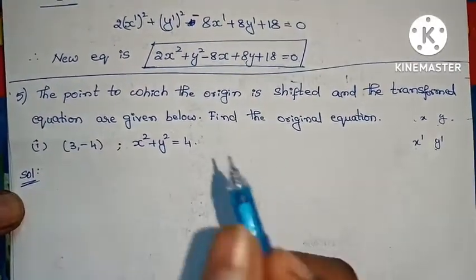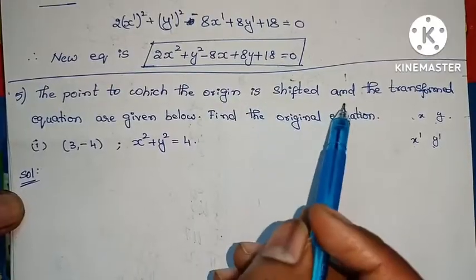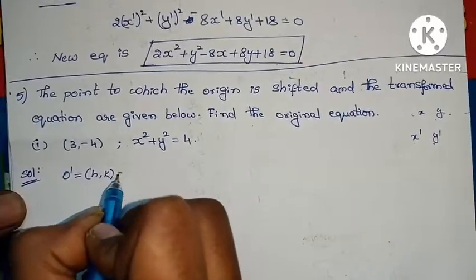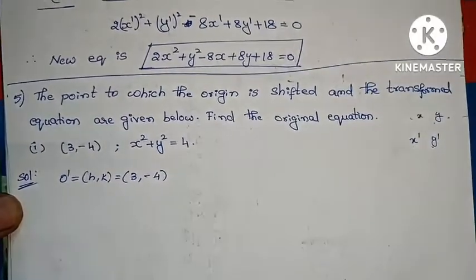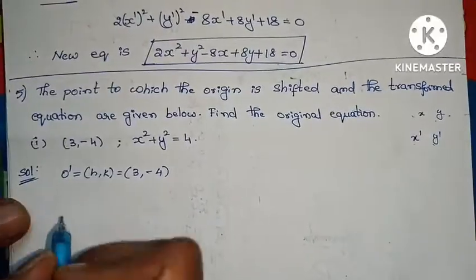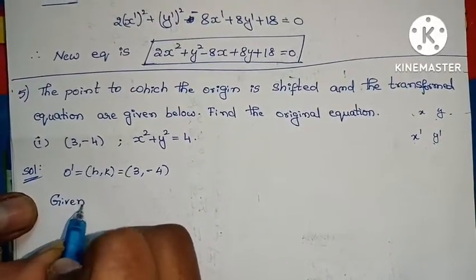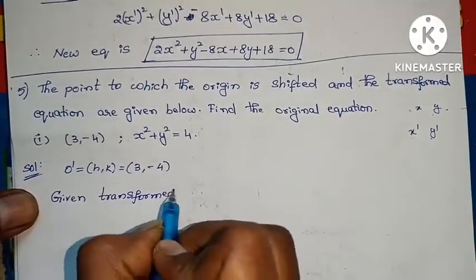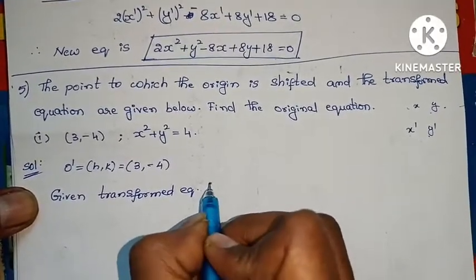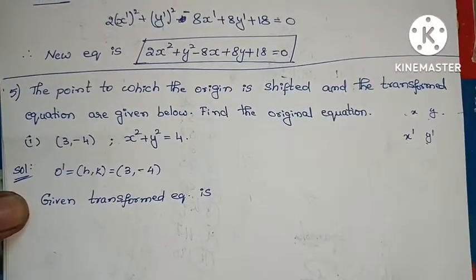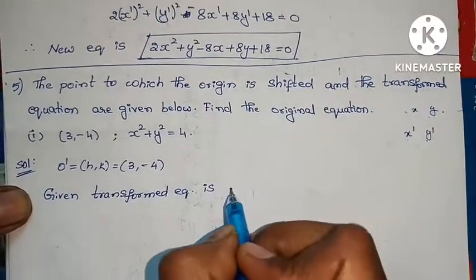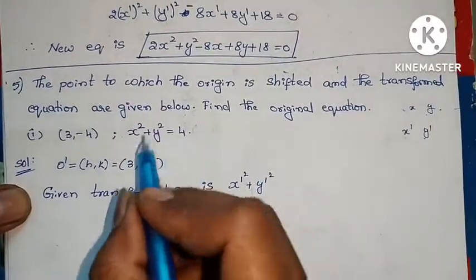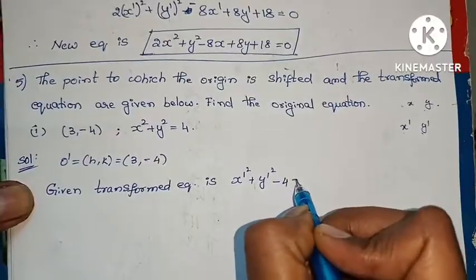Fifth level, first one: we find the origin. The origin is shifted to o dash equals to h comma k, that equals to 3 comma minus 4. The transformed equation involves x dash and y dash.